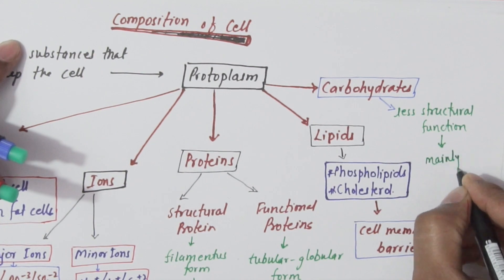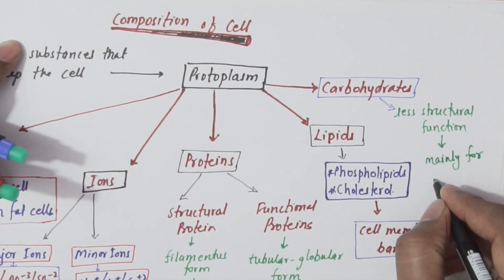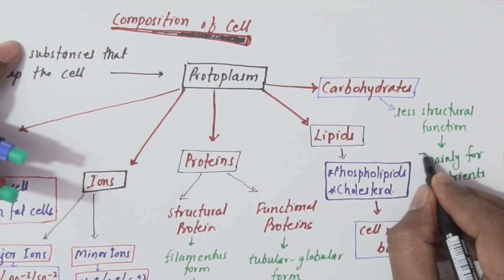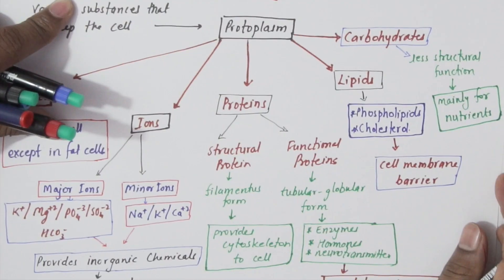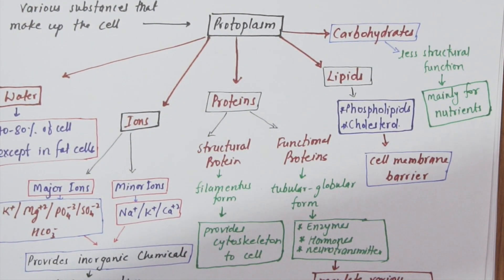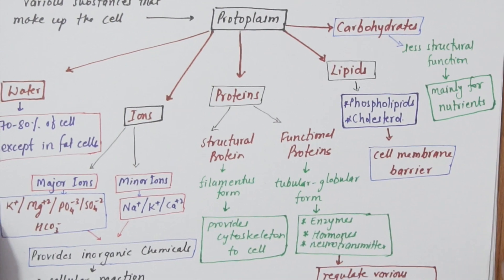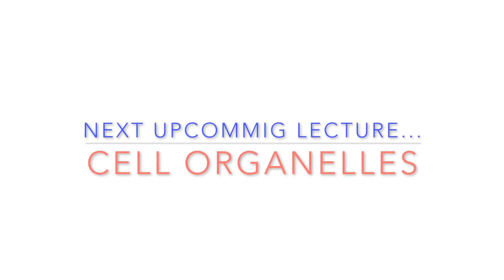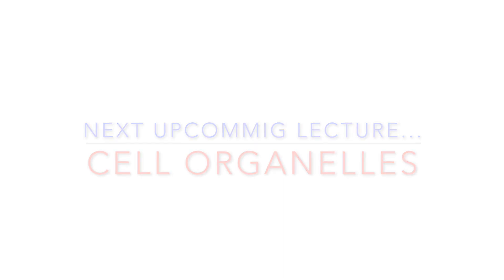The last component is carbohydrates, which have less structural function except as part of glycoprotein molecules, and are mainly used for nutritional purposes. With this we have come to the end of the lecture. The next upcoming lecture will be on cell organology. Thank you very much for watching.